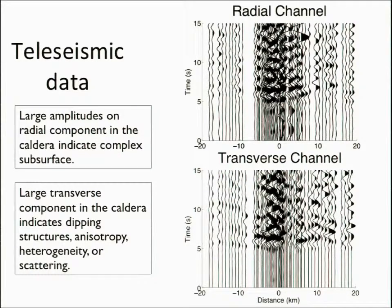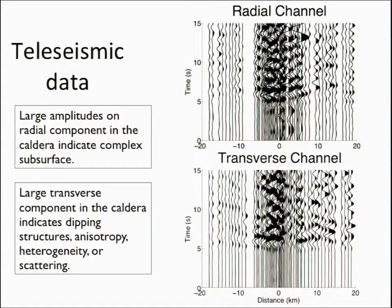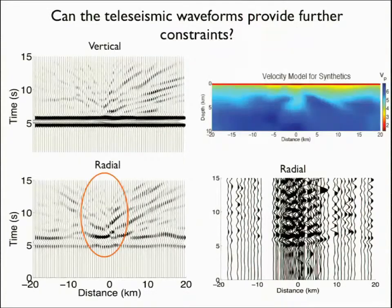The teleseismic data similarly has really valuable information in the waveforms. I'm now showing the radial and transverse channels, and both have large components — in fact, the amplitudes of the radial and transverse are about equal to that of the vertical in the caldera. The large amplitudes indicate really complex subsurface, and to get such big energy on the transverse, we need scattering, dipping reflectors, anisotropy, or some considerable complexity, which is not surprising given our velocity model.